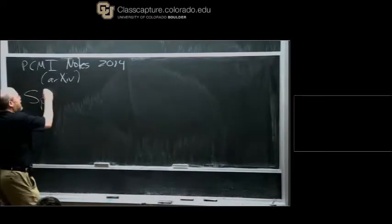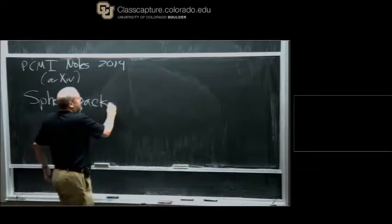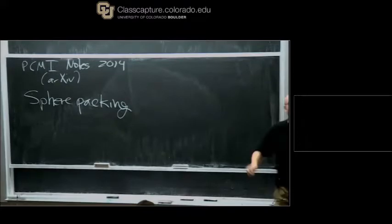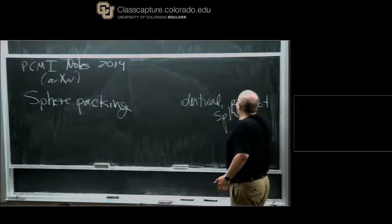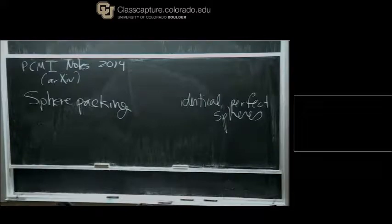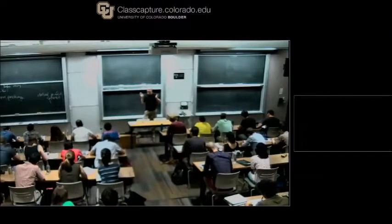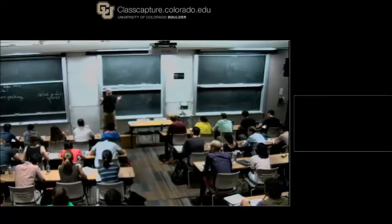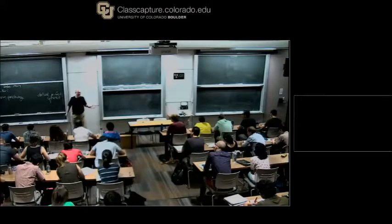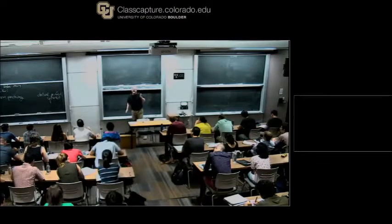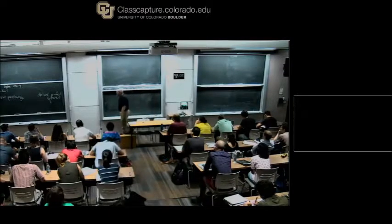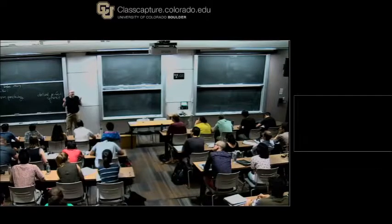So what are we going to talk about? The overall title is something like mathematical packing problems, and we're going to focus primarily on the sphere packing problem. The idea is we'll have a bunch of identical perfect spheres. This is obviously not super realistic for physical applications, but you can think of it as the simplest non-trivial packing problem. Packing cubes is trivial — you can tile space with cubes. But spheres are basically the simplest problem that's really mathematically deep.